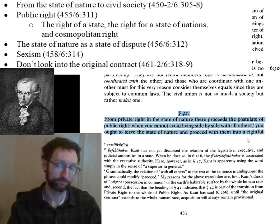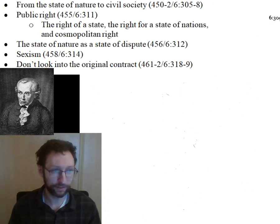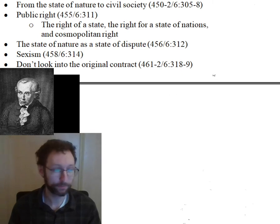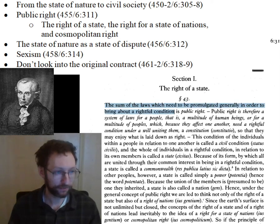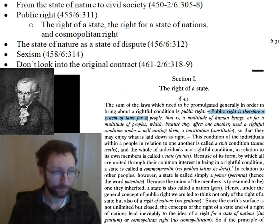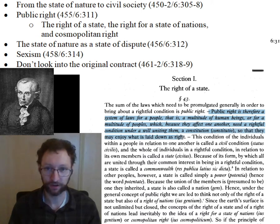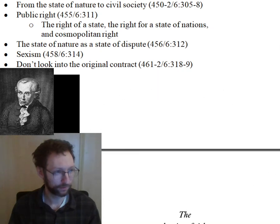We get to part two of the Doctrine of Right, which is about public right. What is public right? Public right is the sum of laws which need to be promulgated generally in order to bring about a rightful condition. More specifically, public right is a system of laws for a multitude of human beings or peoples which, because they affect one another, need a rightful condition under a will uniting them — a constitution — so that they may enjoy what is laid down as right.